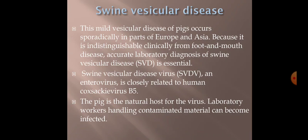Swine vesicular disease virus (SVDV) is an enterovirus closely related to human Coxsackievirus B5. The pig is the natural host of the virus, but laboratory workers handling contaminated material can also become infected. So like Aphthovirus causing FMD, enteroviruses are also zoonotic — lab workers can get contaminated from pigs.